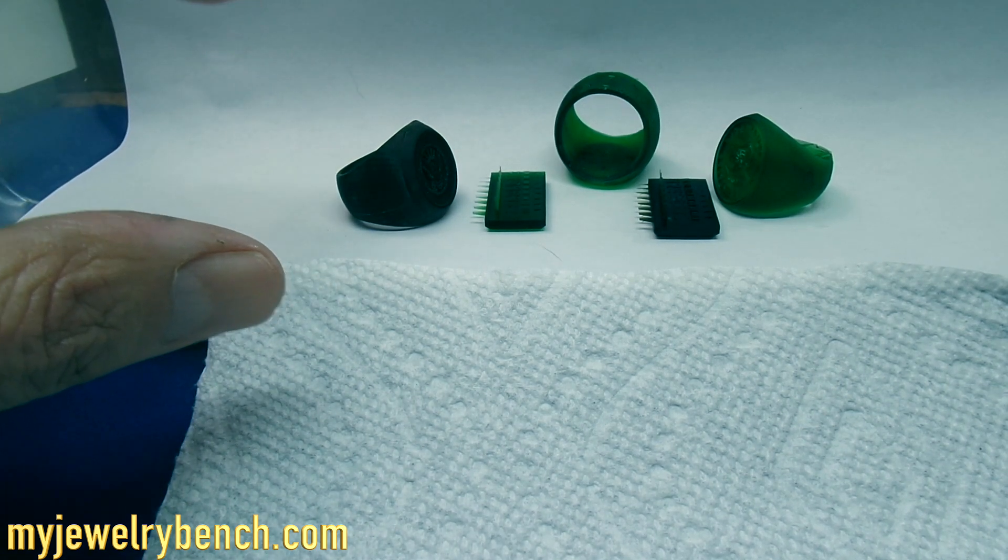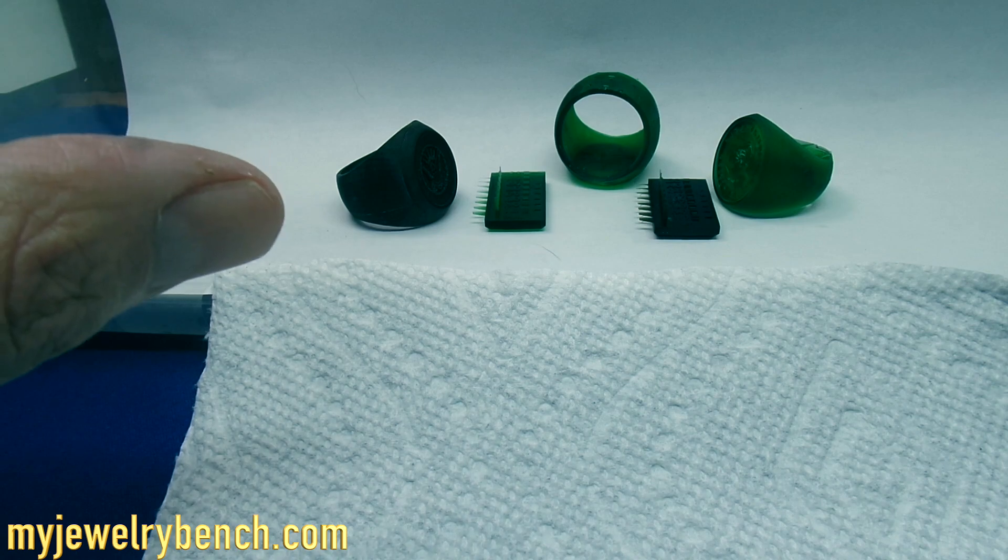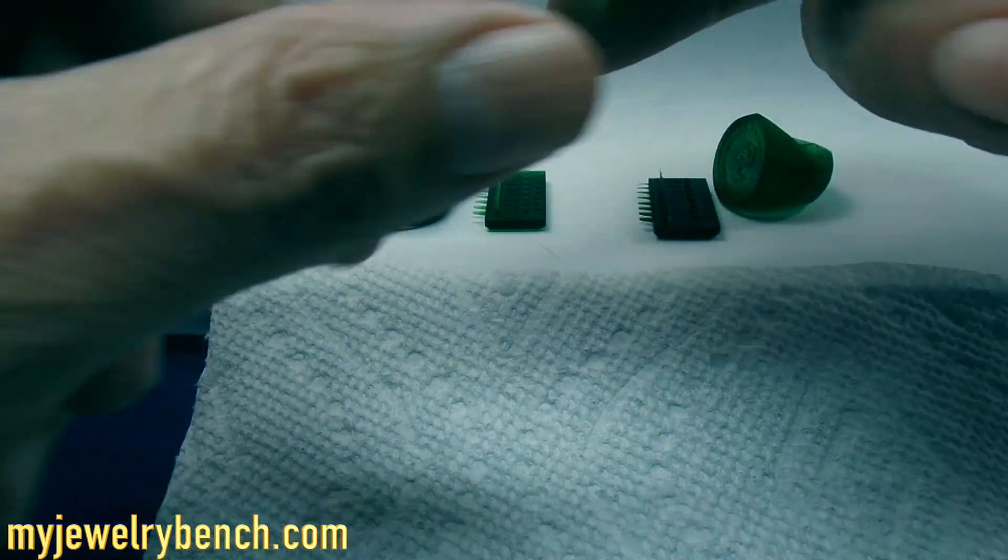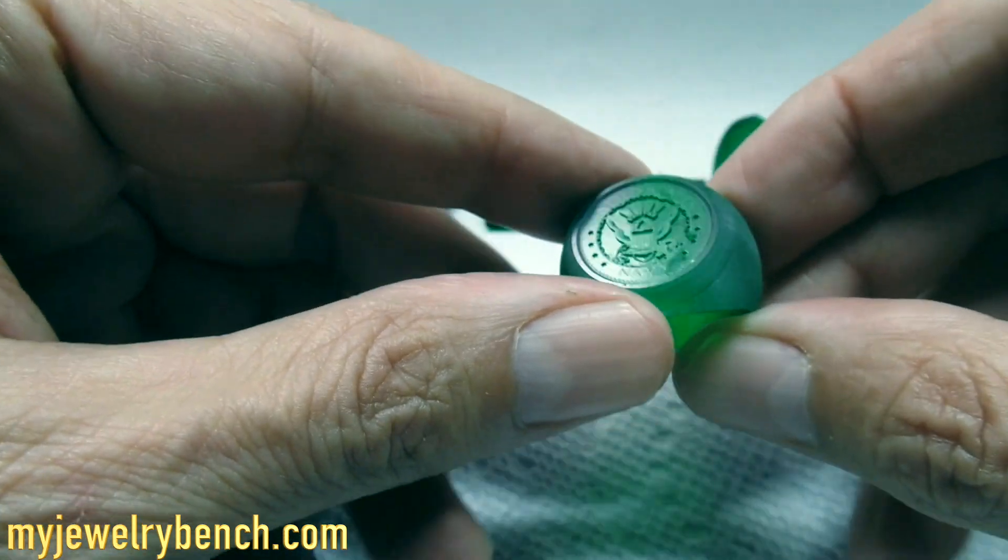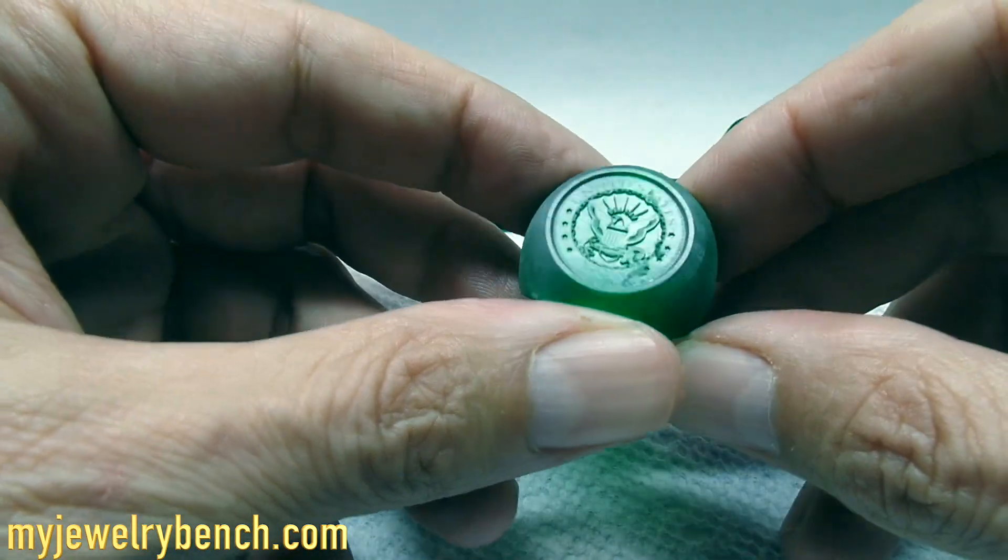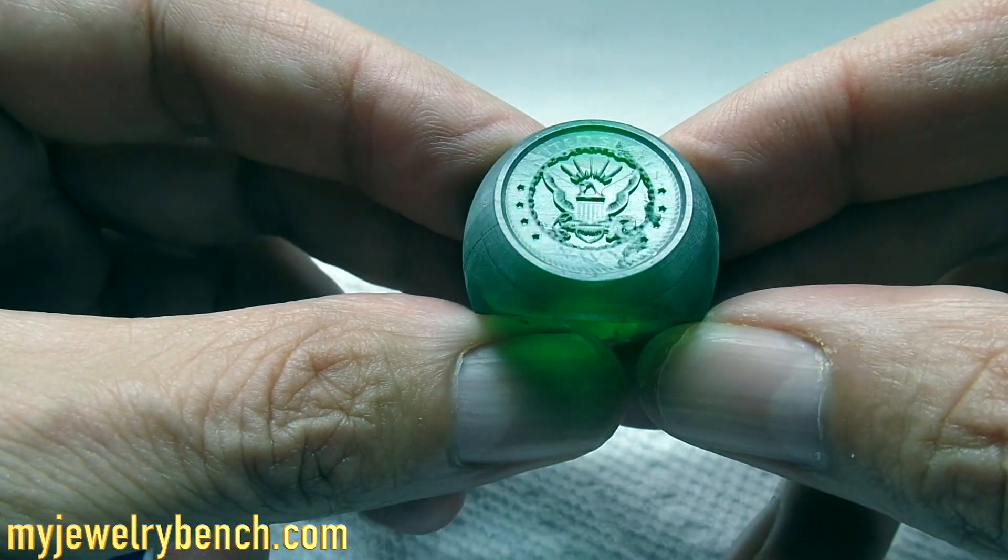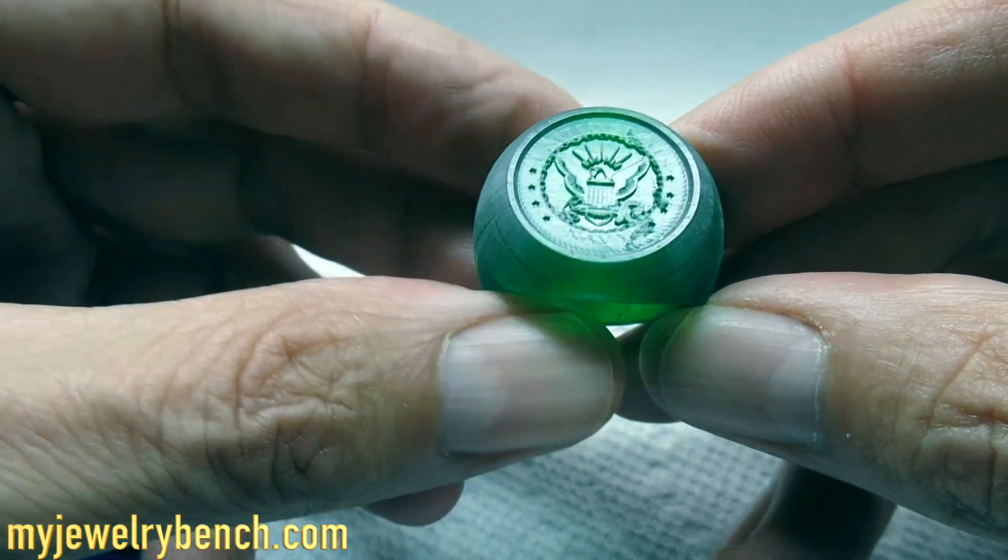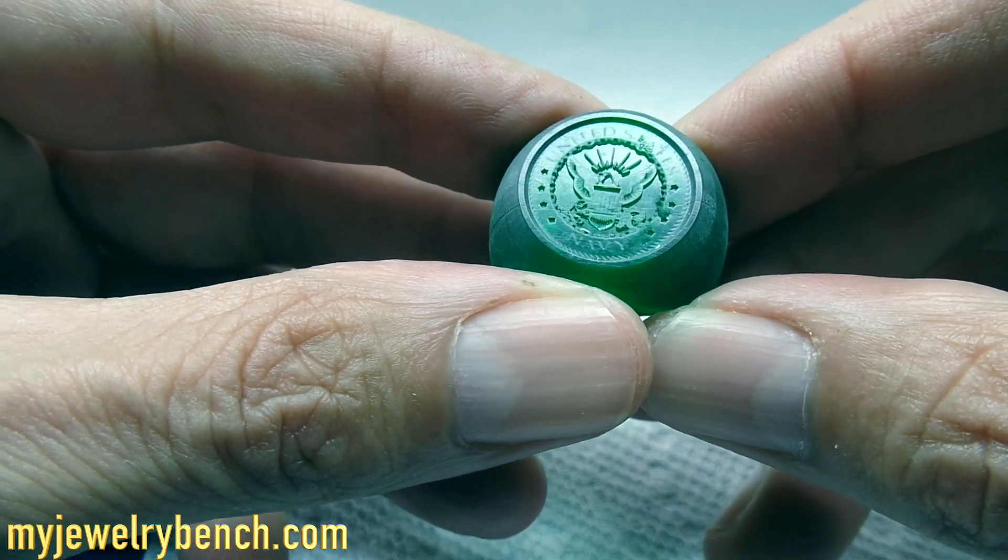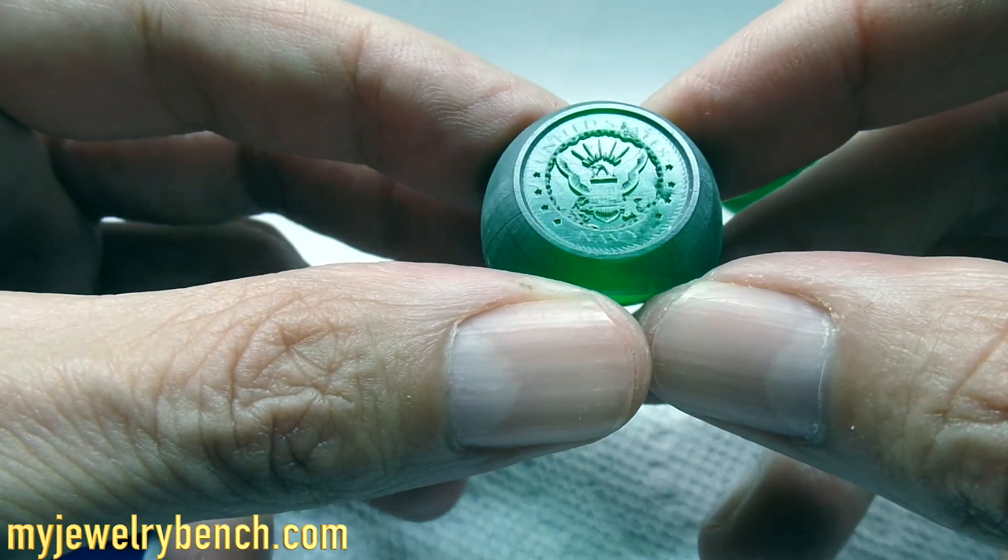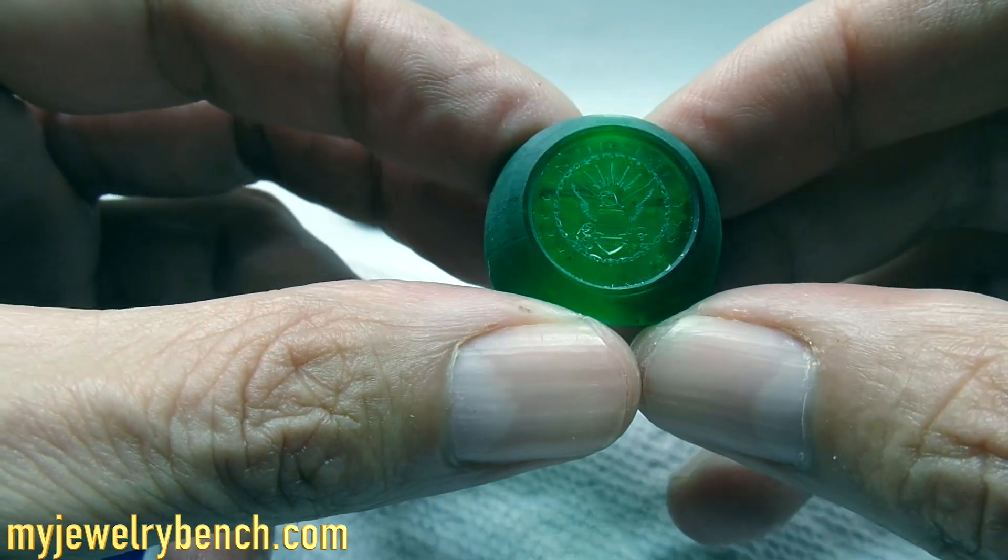But I do want to show you why it's my fault and how you can avoid this problem. First we're going to take a look at this Navy ring that I was doing for somebody and I did this on the Anycubic castable resin. If we look closely at it, you can see that the text and the stars along the perimeter of the emblem just didn't print out well. It should say United States Navy on it and it sadly doesn't.